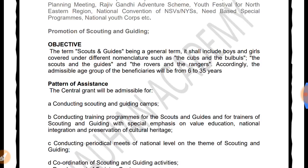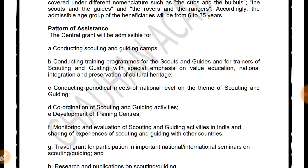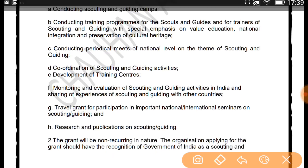Regarding promotion of Scouting and Guiding: it is a general term that includes boys and girls under different nomenclature. The youngest are Cubs and Bulbuls. When they grow up they are called Scouts and Guides. After that they become Rovers and Rangers. The age range covered is 6 years to 35 years. Central grants are admissible for this program.